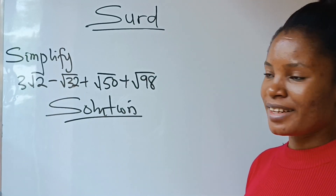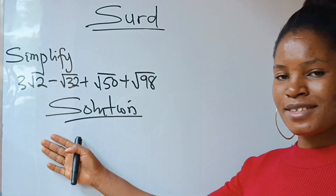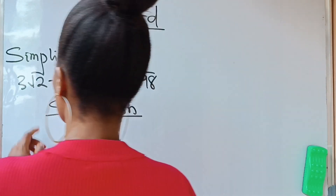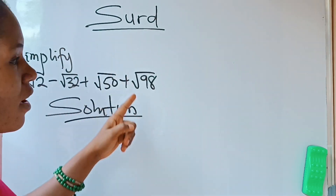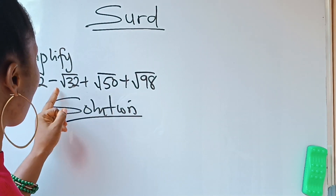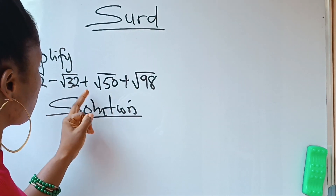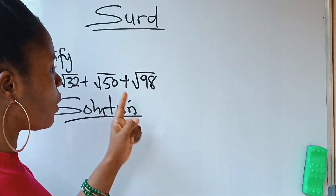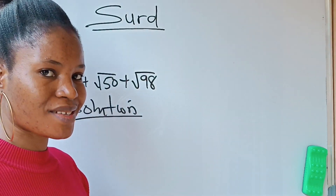Welcome to my channel. Let's get straight to the point. We are asked to simplify 3√2 minus √32 plus √50 plus √98.